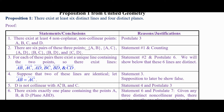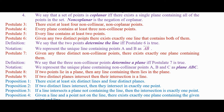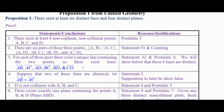For each of these pairs there exists a unique line connecting the two points. So there exist lines AB, AC, AD, BC, BD, and CD. We use Postulate 6: given any two distinct points there exists exactly one line that contains both of them. So if we have two points, we get exactly one line — two points determine a line.